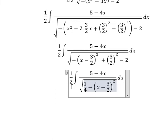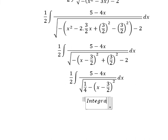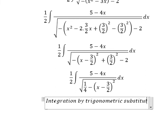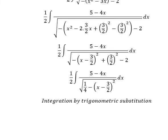Now after we analyze, we can use integration by trigonometric substitution. I will put x minus 3 over 2 equals 1 over 2 secant of t.